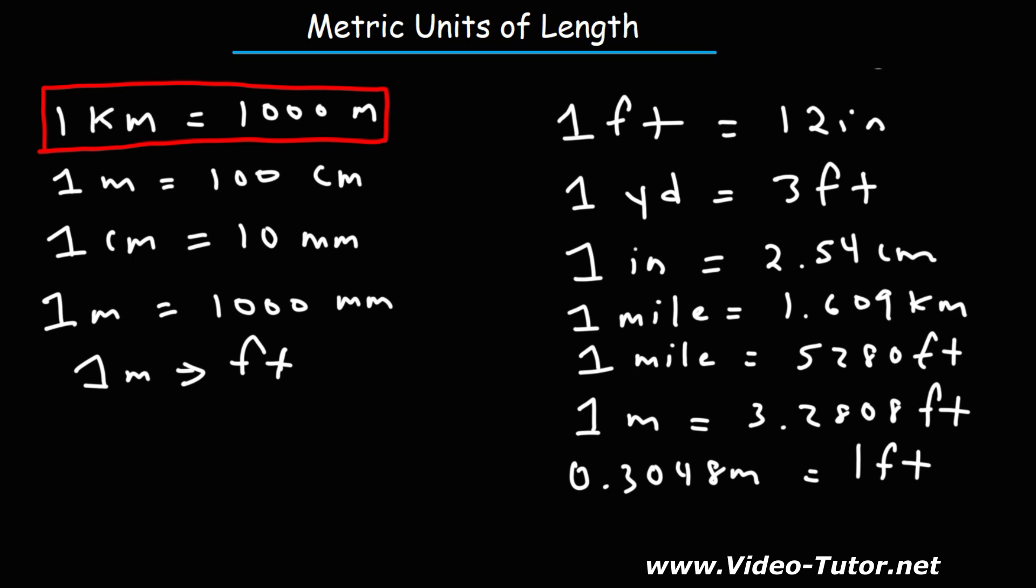Remember how I mentioned that a foot is a little bit less than one-third of a meter? We can see that here. This tells us that 1 foot is about 30.48% of the length of a meter when you write it that way. That's why I could say that a foot is a little bit less than one-third of a meter. It's because of this conversion factor.